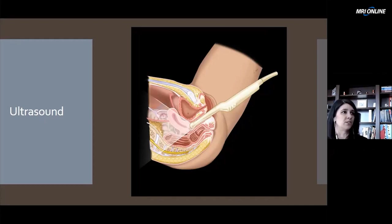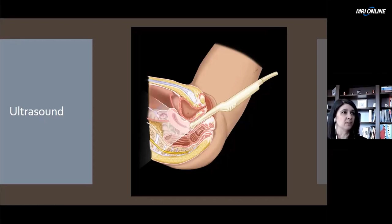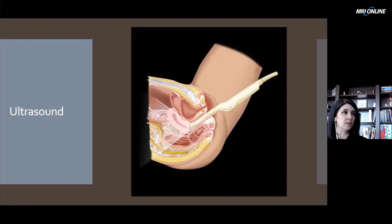Another thing to remember when you're doing transvaginal imaging is that you want the bladder to be decompressed, so that patient's going to need to empty their bladder. That's for two reasons. Number one is patient comfort — it's really uncomfortable to have a transvaginal probe with a full bladder. Number two is if the bladder is overly distended, it's going to push the top of the uterus back, and if it gets too far back it may actually be too far to get good images. Because remember, with a high-frequency probe you need a short distance to get those beautiful images.